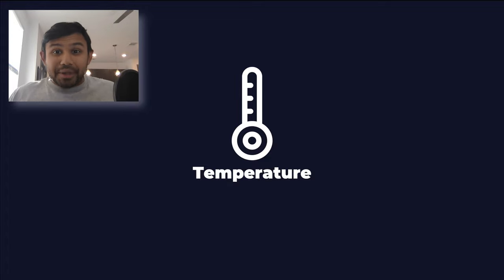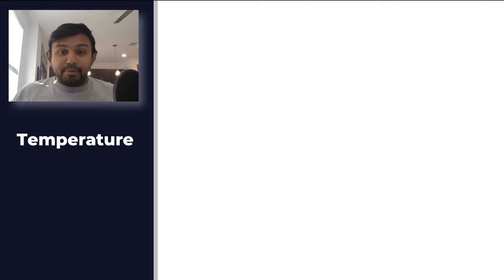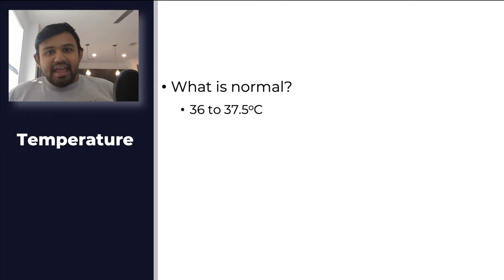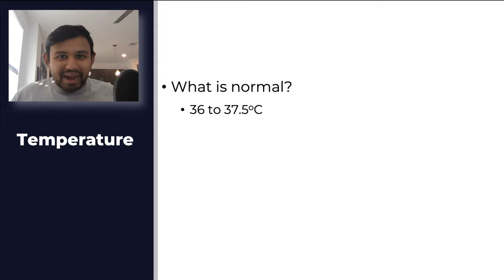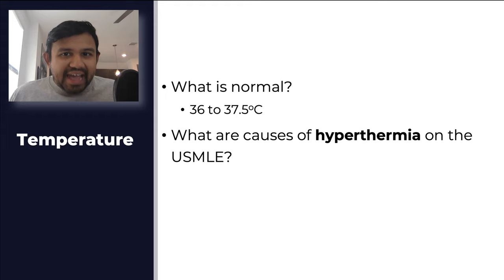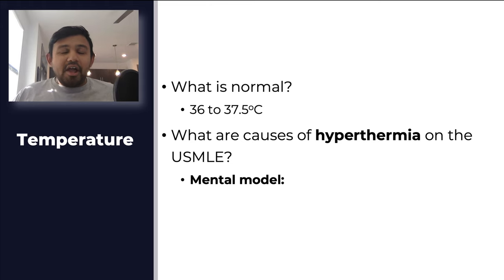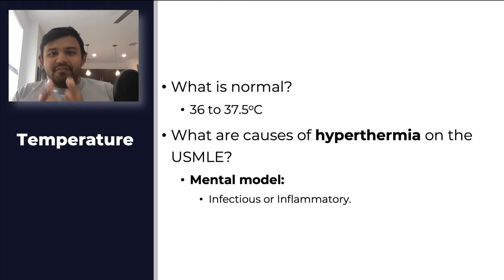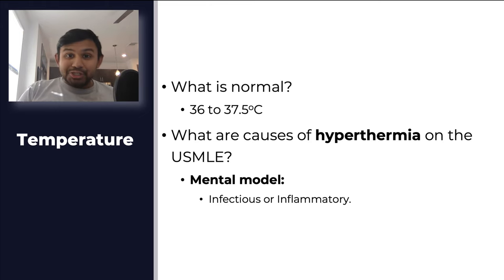The first one we'll start with is temperature. Normal temperature is about 36 to 37.5 degrees centigrade. For the USMLE, you need to recognize what constitutes hyperthermia, which is usually a temperature greater than or equal to 38. When I see hyperthermia on the USMLE, the causes are rooted in this mental model: when I see a fever in a vital sign, this is either an infectious or inflammatory pathology.